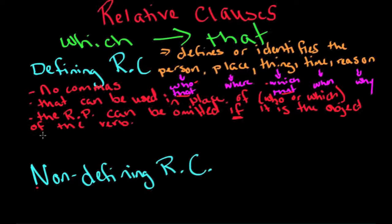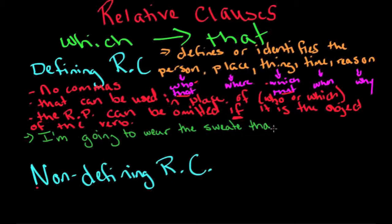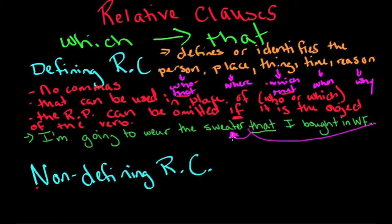The first example I'm going to give you. I'm going to wear the sweater that I bought in Whitefish. I'm going to shorten that to just WF, my city. A couple things that you can see is that I bought in Whitefish, this tells me what sweater. It defines sweater, so it's necessary.